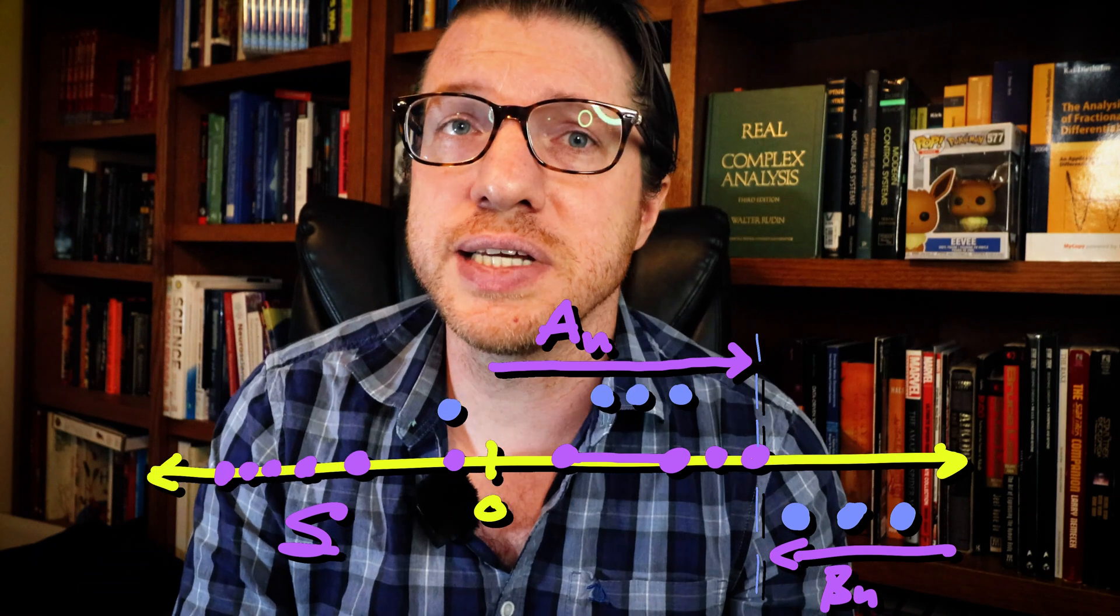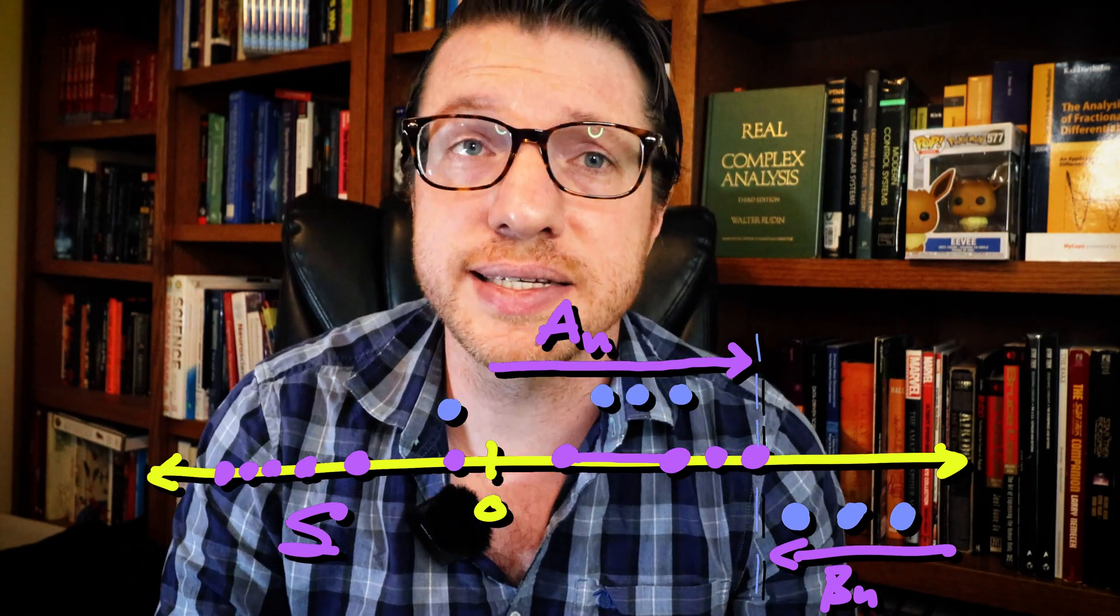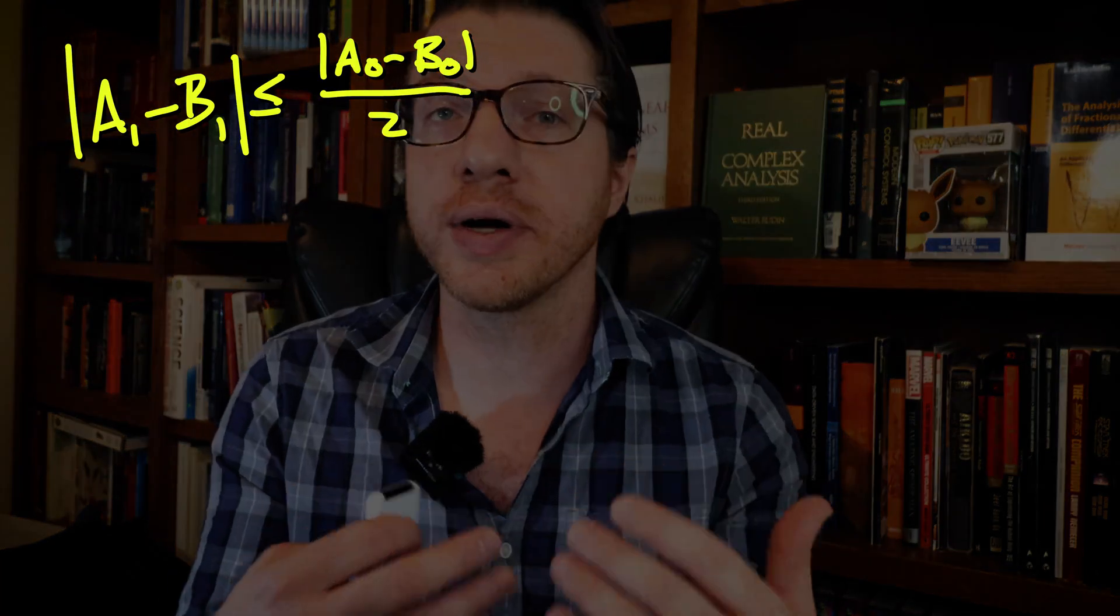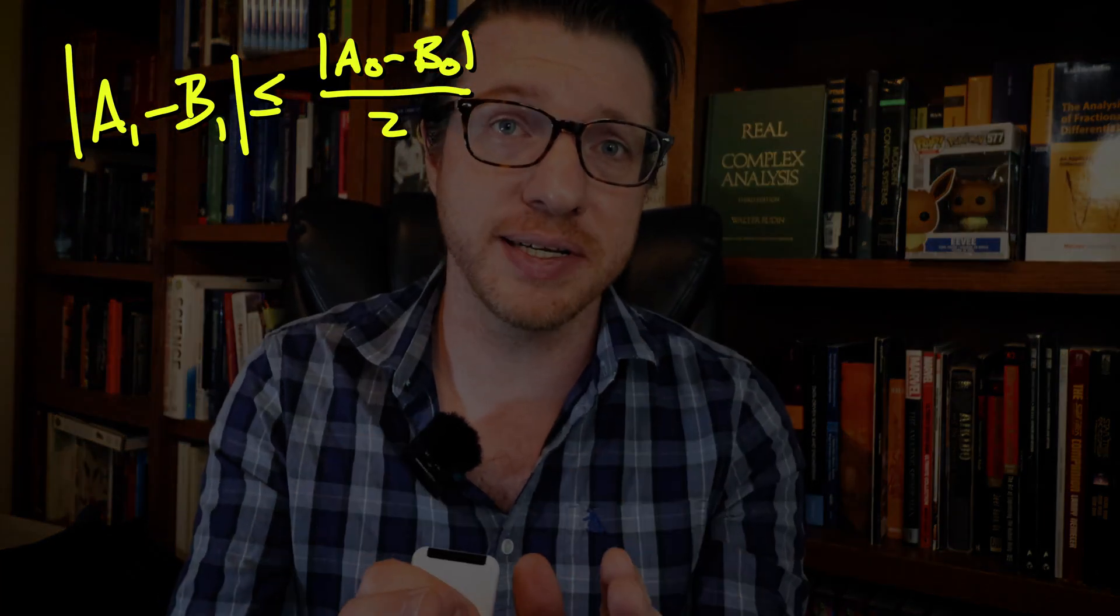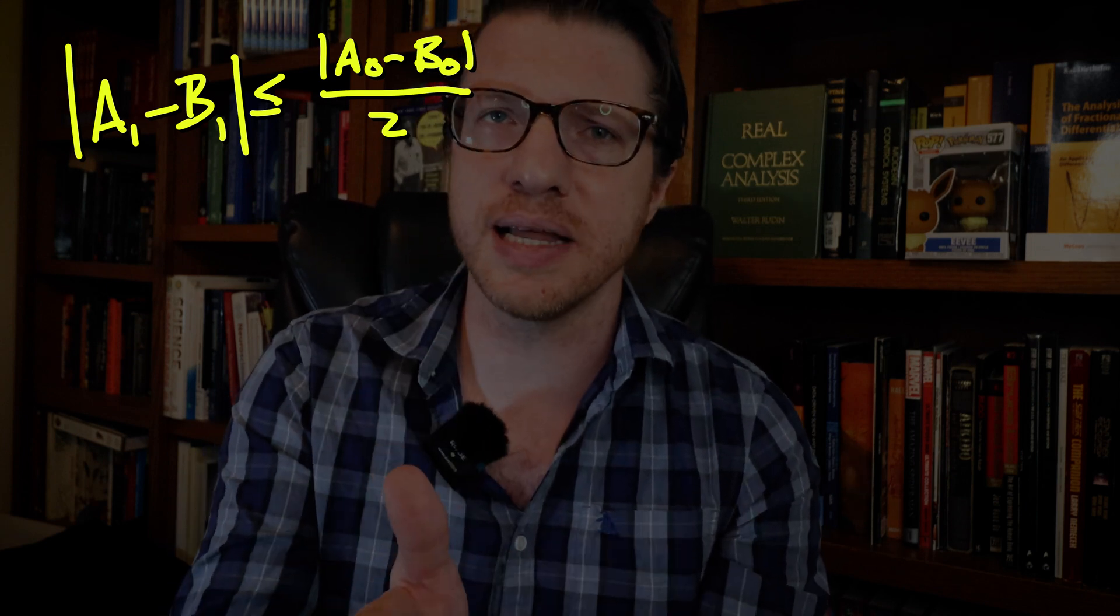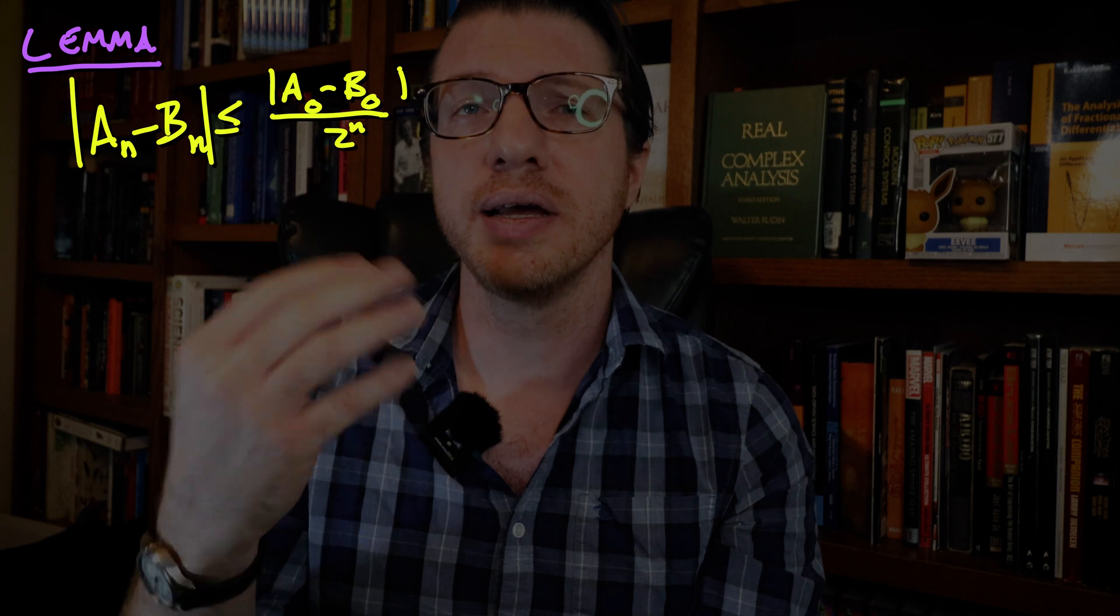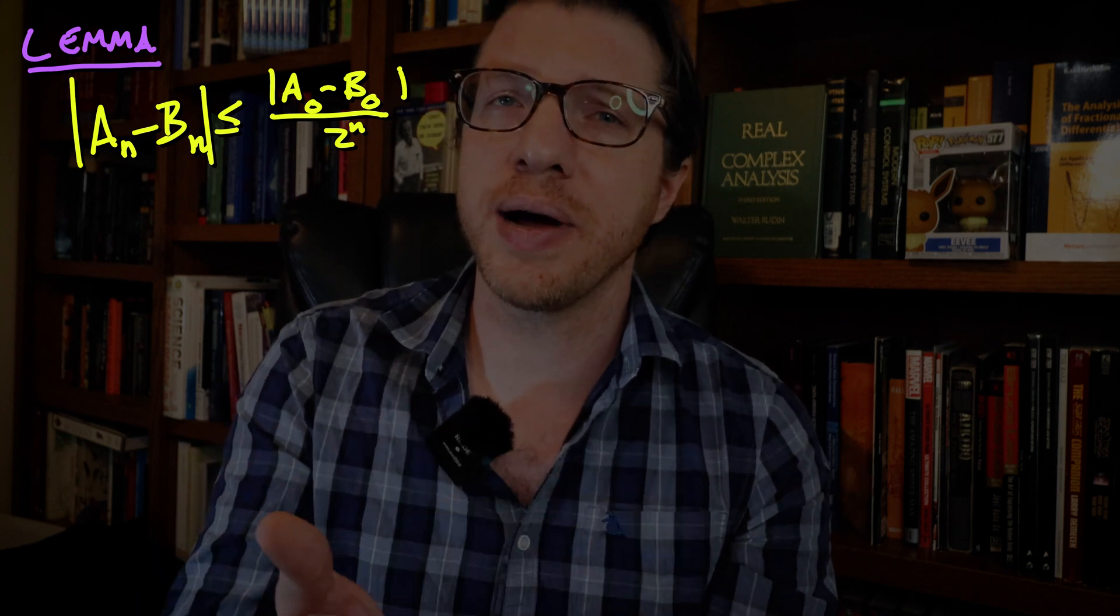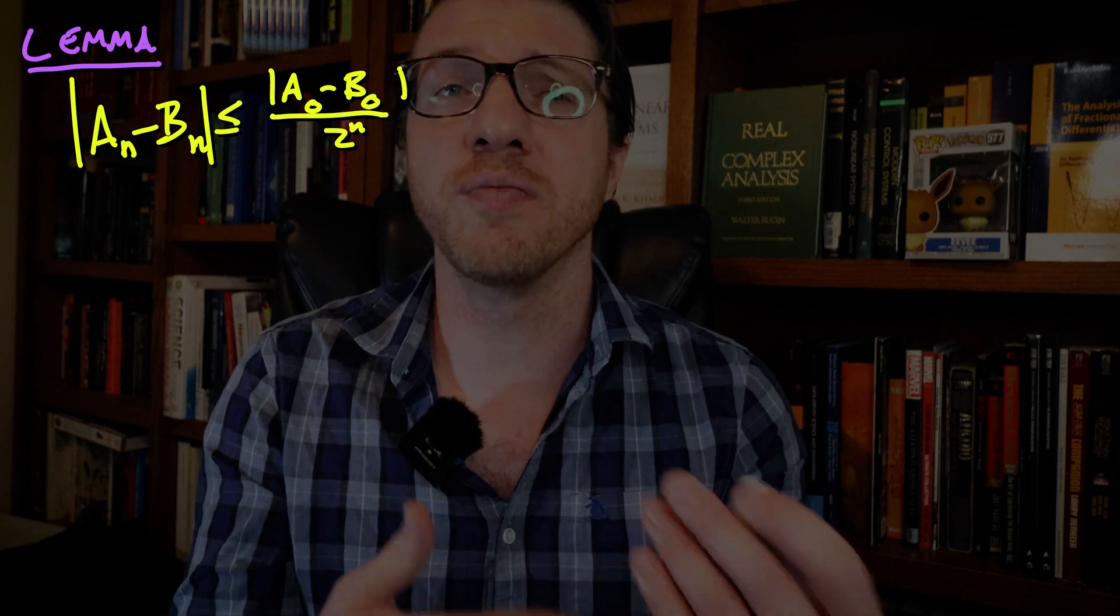Let's look at our algorithm again. For a set S, we have two sequences that should be approaching the least upper bound of S, an and bn. If we look at the distance between a1 and b1, we can quickly see that this is bounded by half of the distance between a0 and b0. Let's make this an explicit lemma, which will become a chunk later in our theorem. We will want to use this later when we talk about the distance between consecutive terms of bn.